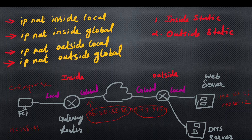If you want to use a service provider, you can use a web server. If you want to use a public IP, you can use a private pool range. When you use a private pool range, you can see the pool range. We can use a library password. Here is the Cisco Packet Tracer.